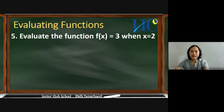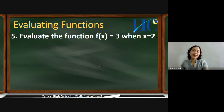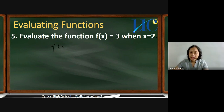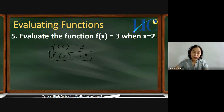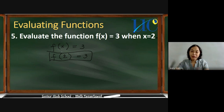Next: evaluate the function f(x) = 3 when x is equal to 2. You might be wondering where the variable x is on the other side — this is an example of a constant function. The output on the other side is a constant, meaning it will not be changing. You still replace x with a hollow parenthesis and place 2 inside. So f(2) = 3. Because this is a constant function, the output variable will not change.